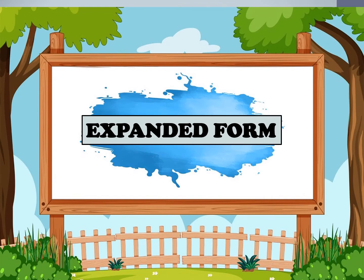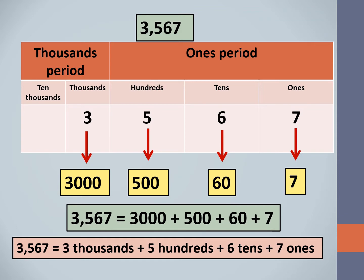Expanded form is writing the number as the addition of the place value of its digits. Let us now learn to write three thousand five hundred and sixty-seven in expanded form. We first place the digits of the number in the place value chart and then write the place value of each digit.